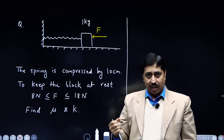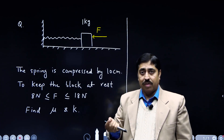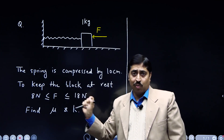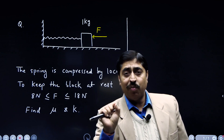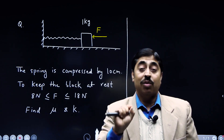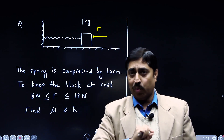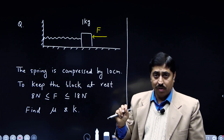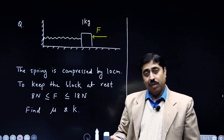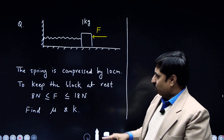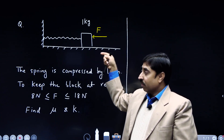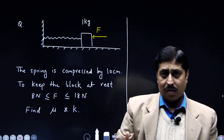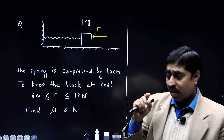This statement simply means that the minimum force F required to keep the block stationary is 8 Newton, and the maximum force that can be applied to keep the block at rest is 18 Newton. If the force is less than 8 Newton, the block is going to move, and if the force is greater than 18 Newton, the block is also going to move. In what situation will the required force be minimum — 8 Newton?